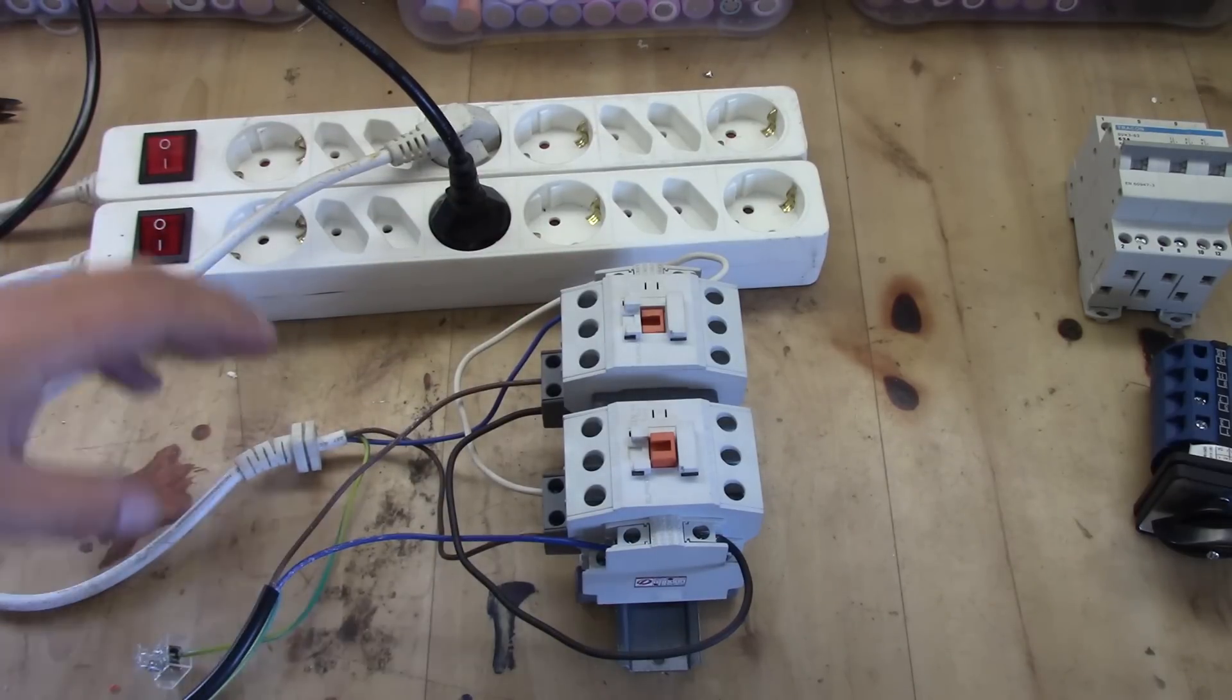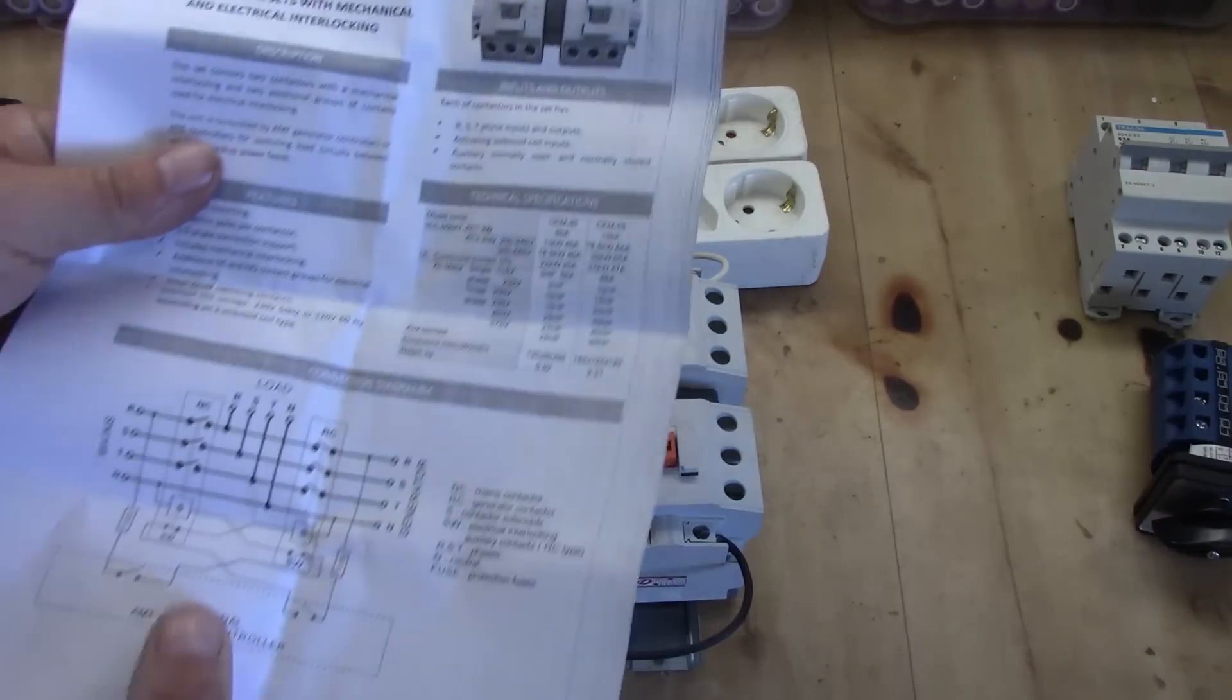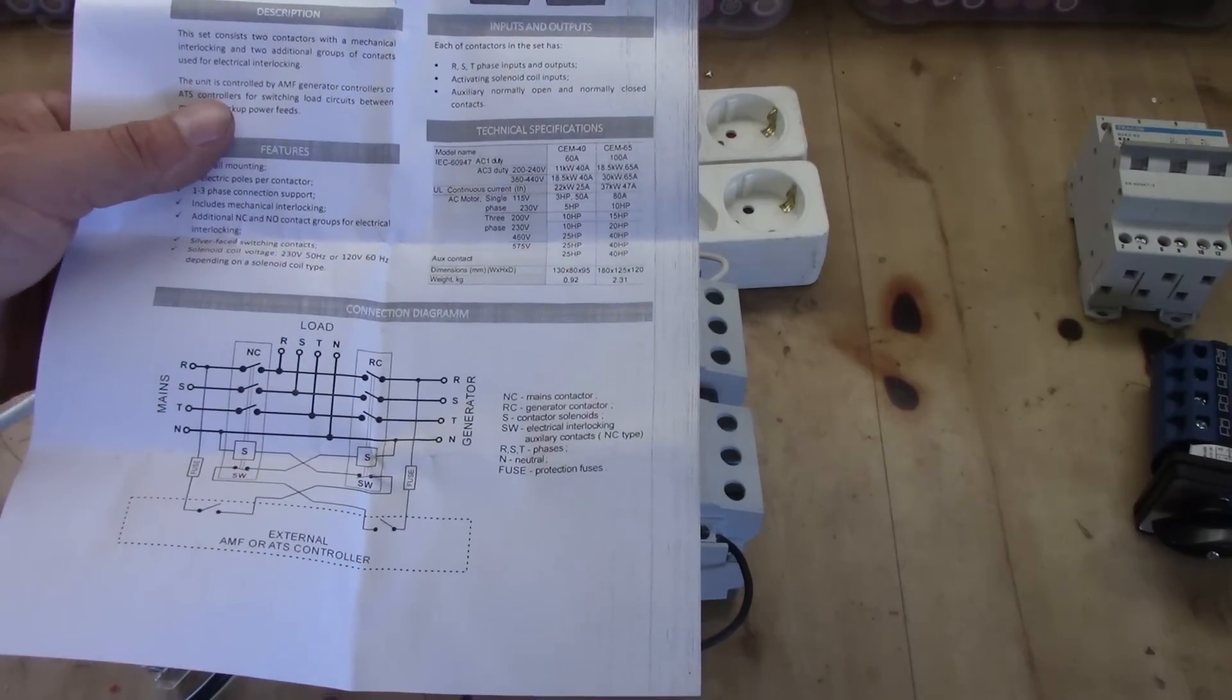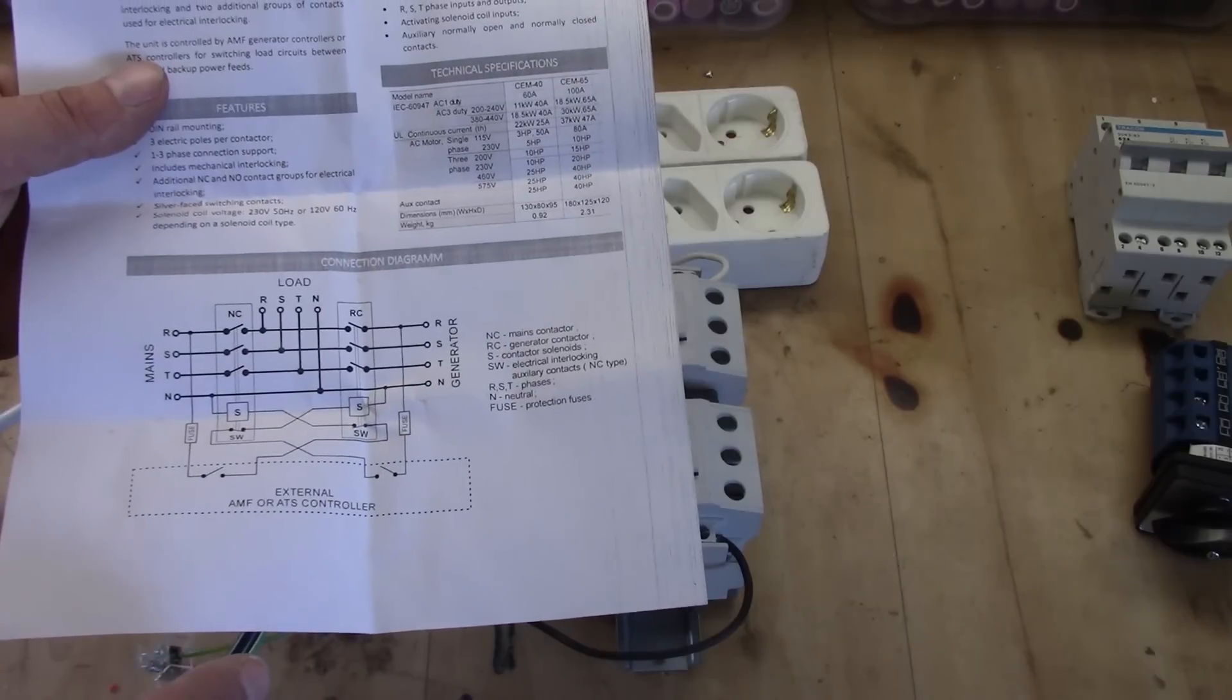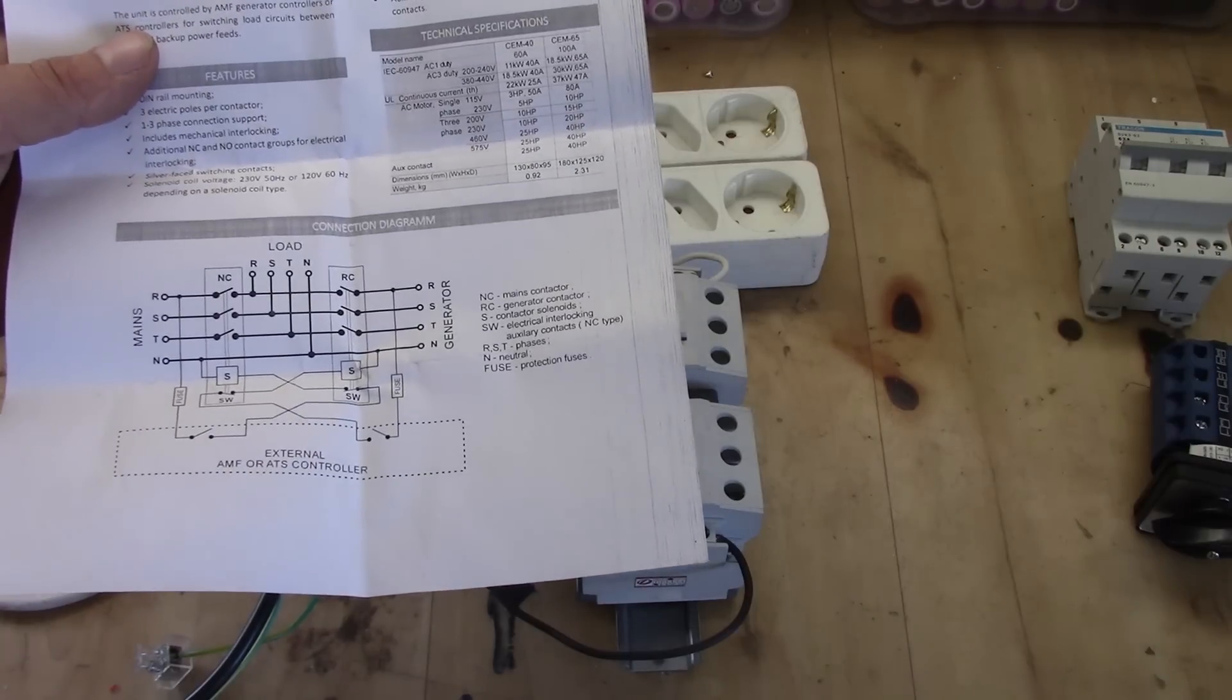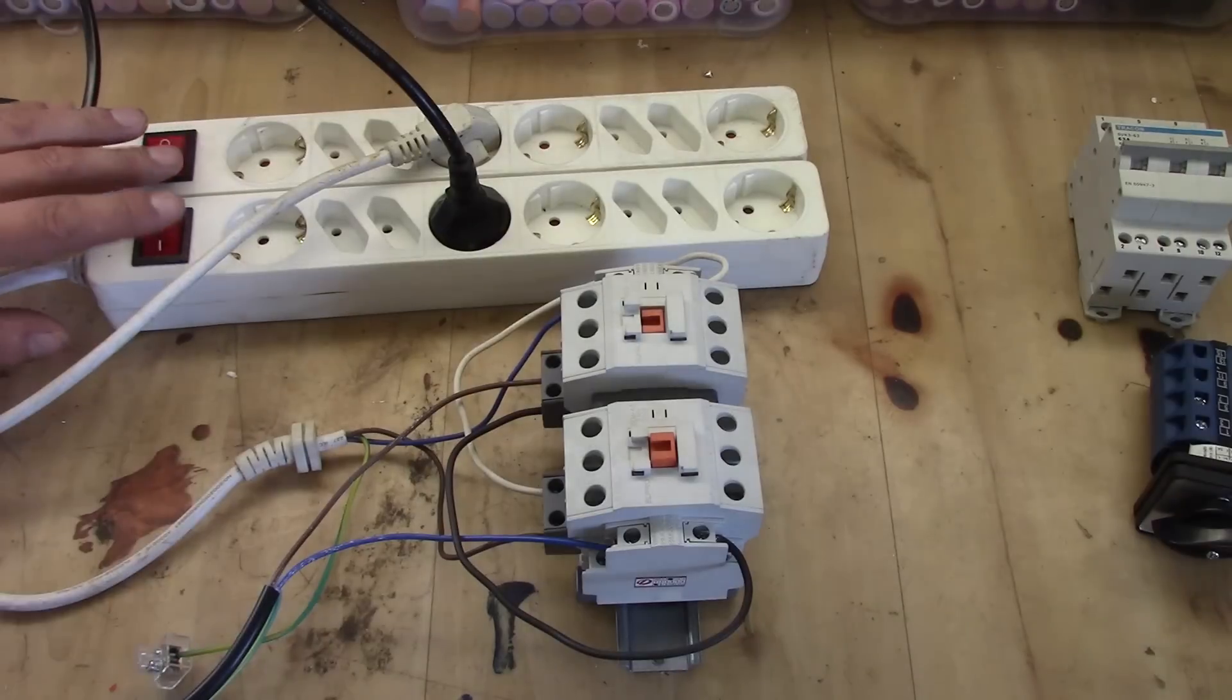In an ideal situation you need to have a control system, the same as shown here, that controls which one is the first one, so it always switches back if needed. For instance, if you have an issue with your grid and the grid goes out, it will switch over to the solar. But it might be that you want the grid to switch on again when the grid goes back. Then you need to have something that controls those buttons.